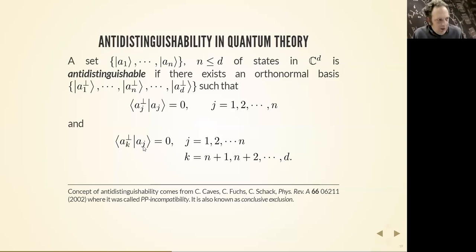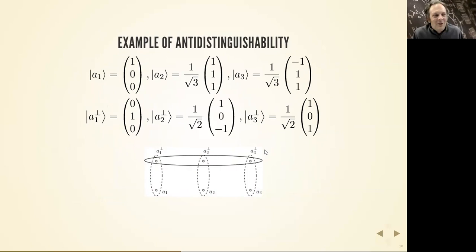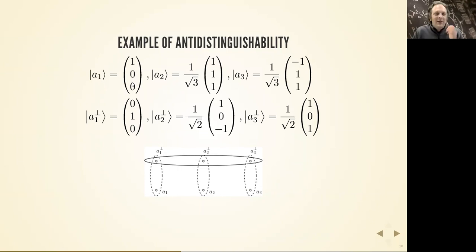In the example: a₁⊥, a₂⊥, a₃⊥ form a complete orthonormal basis where a₁⊥ is orthogonal to a₁, a₂⊥ is orthogonal to a₂, and a₃⊥ is orthogonal to a₃. If you prepare one of these three states a₁, a₂, a₃ and perform the perp measurement, whichever outcome you get, you can rule out one of those three states. This is weaker than distinguishability because the three states don't have to be orthogonal to each other.